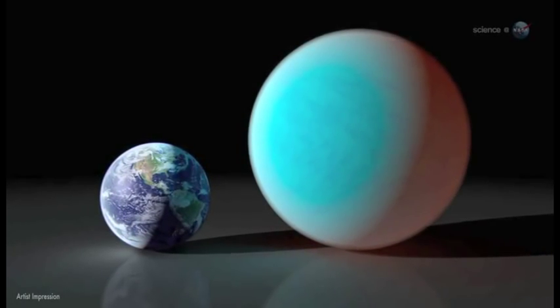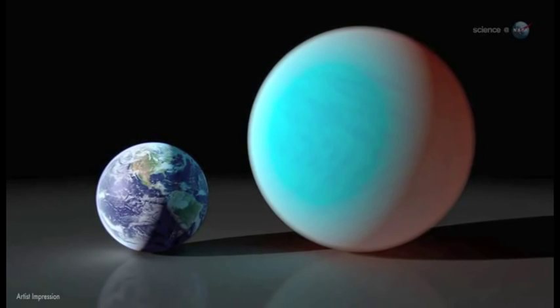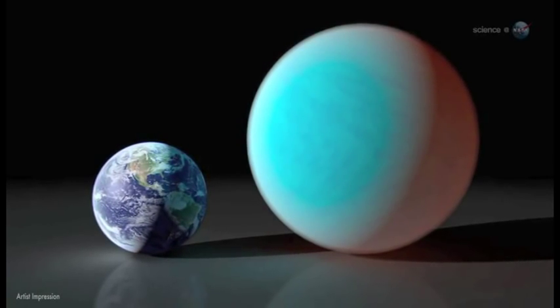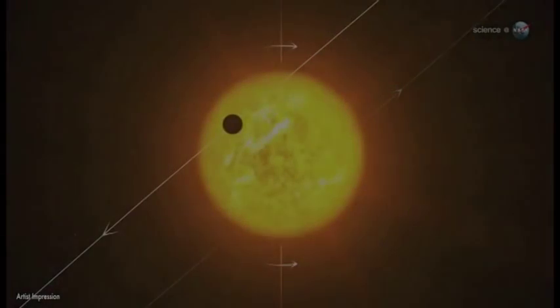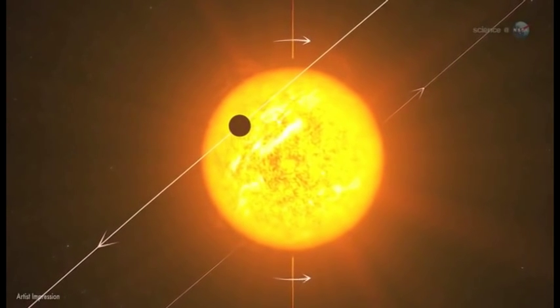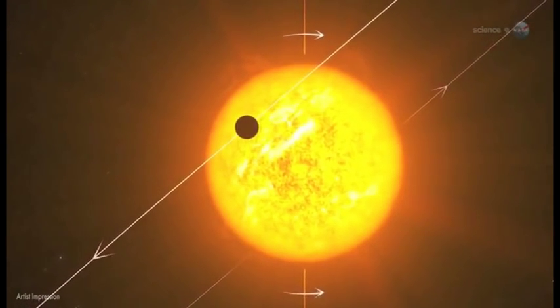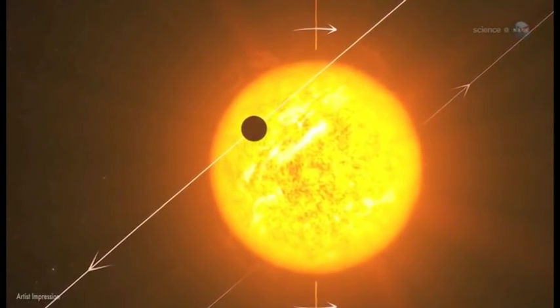Those properties place 55 Cancri e in the super-Earth class of exoplanets, a few dozen of which have been found. Only a handful of known super-Earths, however, cross the face of their stars as viewed from our vantage point in the cosmos.